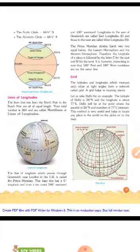The line of longitude which passes through Greenwich, near London in the UK, is called the prime meridian. This base line has 0 degree longitude.